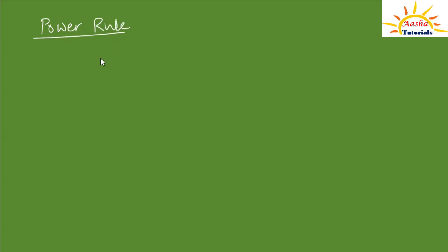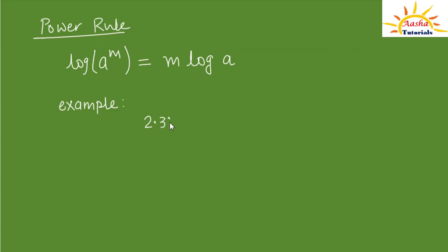Now let's look at problems using the power rule. As per the power rule in logarithms, log of a raised to m equals m times log of a. Suppose we have 2.31 and we need to find its 4th power. Using the power rule: log of 2.31⁴ equals 4 times log of 2.31.